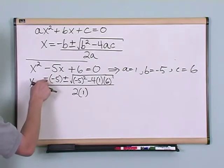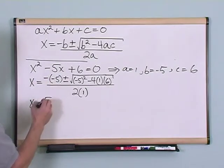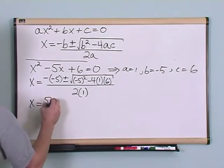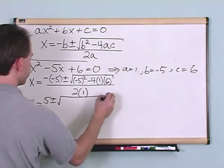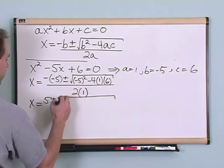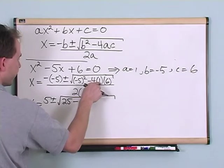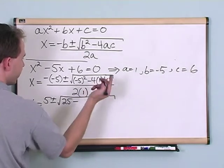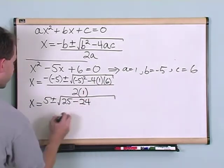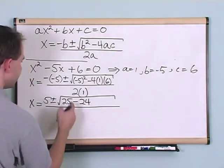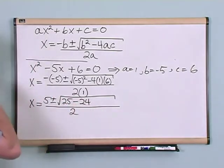Negative times negative 1 times negative 5 is just simply 5, plus or minus the square root. Negative 5 squared is positive 25, minus 4 times 1 is 4, so then 4 times 6 is 24, so I've got 24 in here, over 2 times 1 is just simply 2.